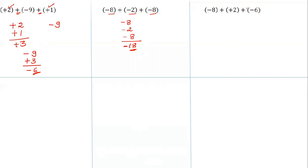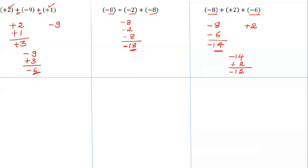Now add minus 8, plus 2, and minus 6. Group the numbers having the same sign: minus 8 and minus 6 have the same sign. Add them: 14, so minus 14. Only one integer has a positive sign: plus 2. So now minus 14 plus 2 — subtract: that is 12. Answer: minus 12, because of the bigger number's sign.